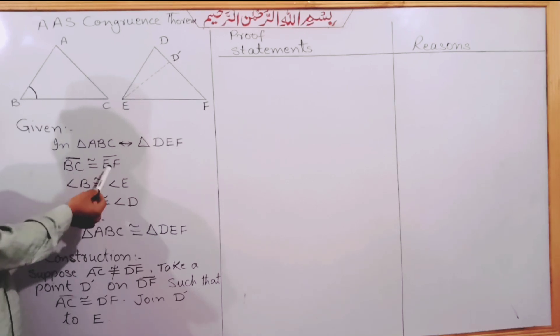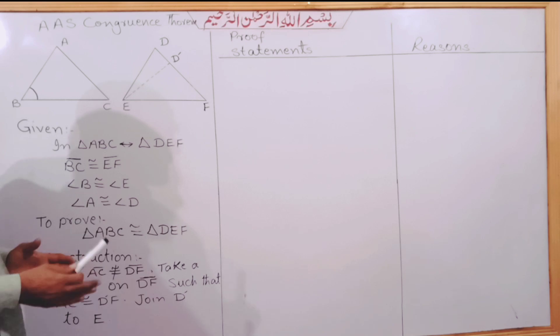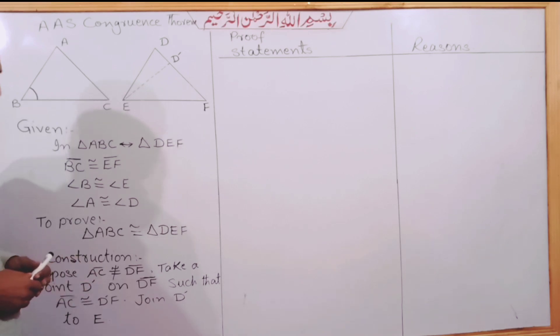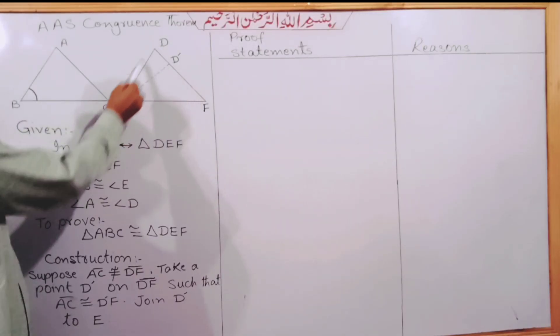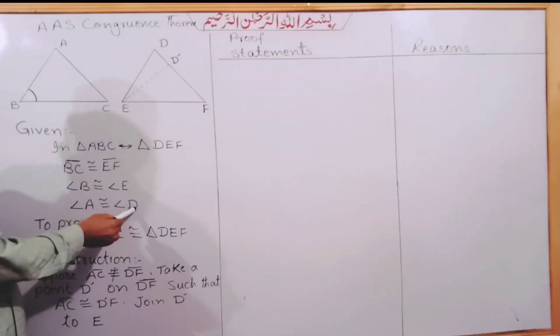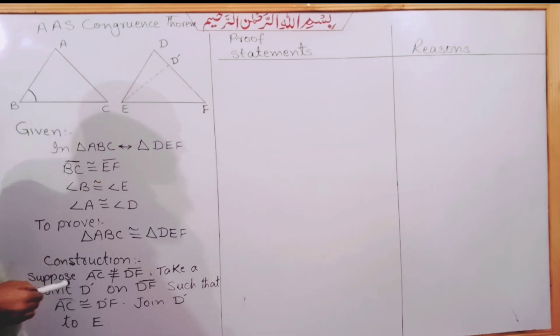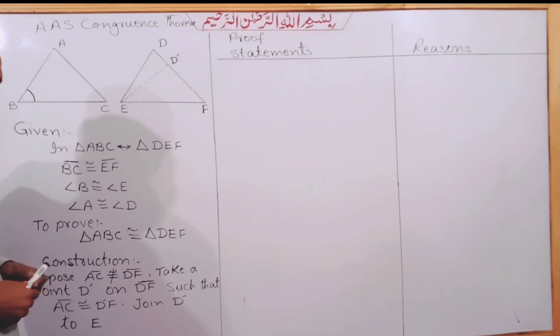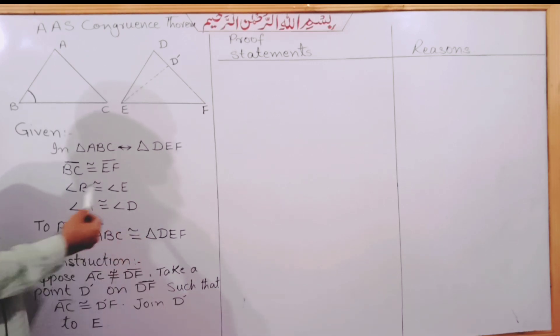In the given triangles, side BC and side EF are congruent. Angle B and angle E are congruent, and angle A and angle D are congruent. These are the given conditions. We must prove that the two triangles are congruent.